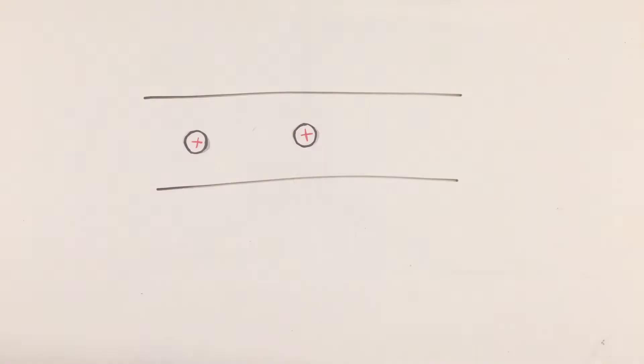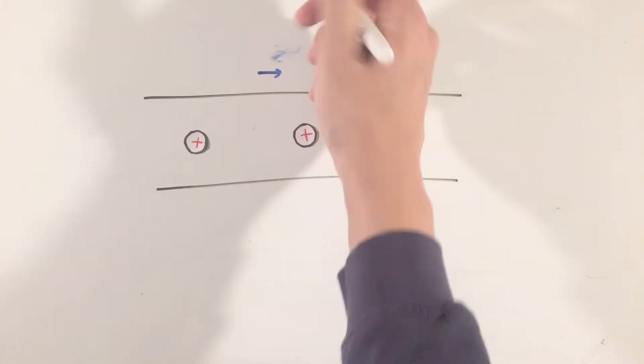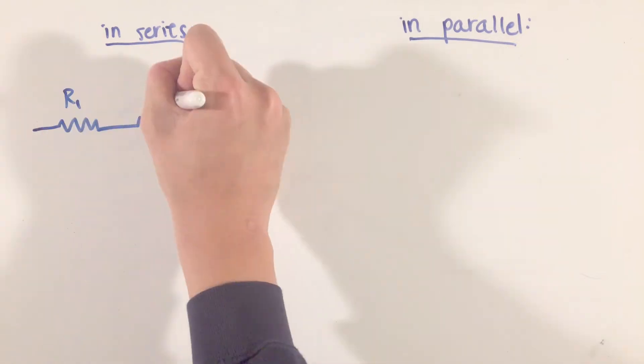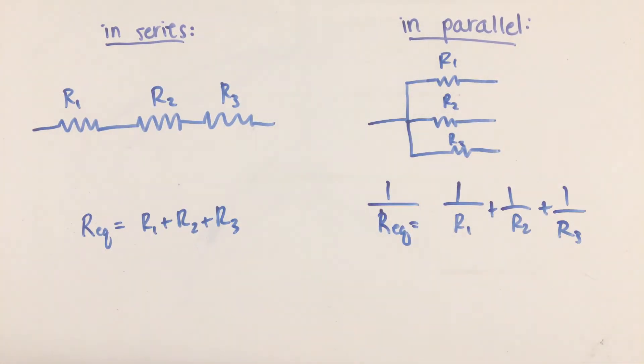First, because current was defined as the rate of change of charge, it will now be defined as the derivative of charge with respect to time. In addition, for resistors in series, their resistances add up. For parallel arrangements, it follows the sum of the reciprocal pattern.